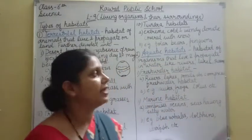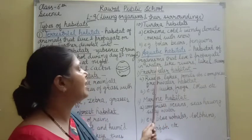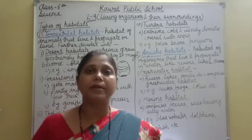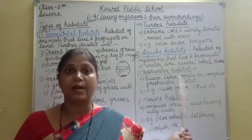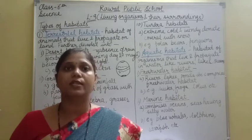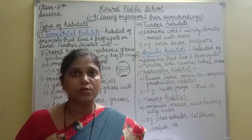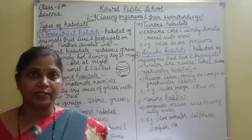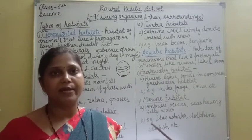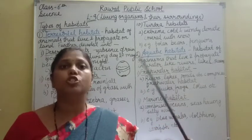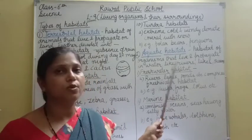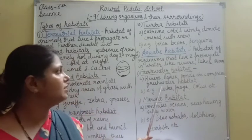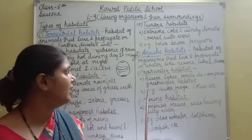Now coming to aquatic habitat. Aquatic habitat is the habitat of organisms that live and propagate in water. जो plants और animals water में survive करते हैं, those come under aquatic habitats. Water means river भी हो सकती है, pond, lakes, streams, oceans, seas — इतने छोटे से pond से लेकर ocean तक सब aquatic habitat में आता है. यह further divided है: fresh water habitat and marine habitat. Rivers, lakes, ponds, etc. comprise fresh water habitat.